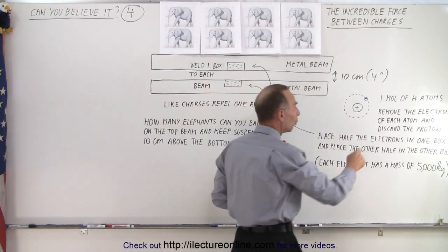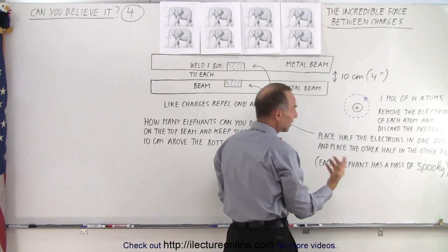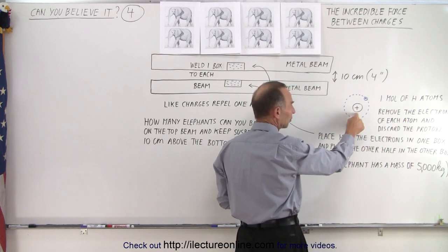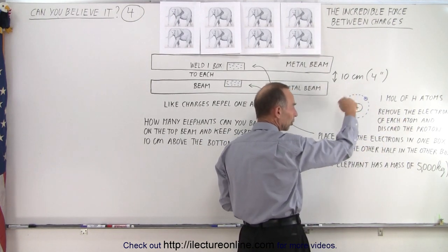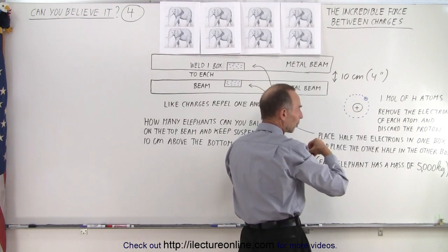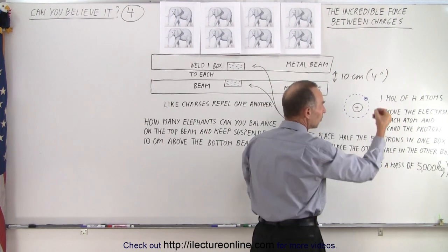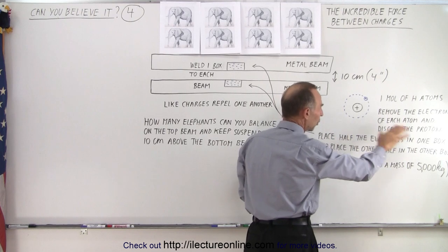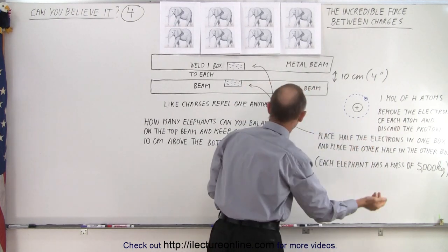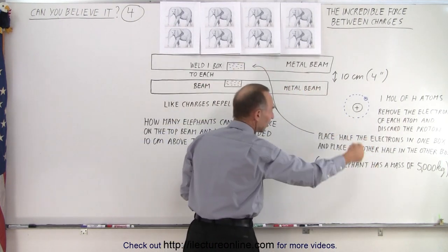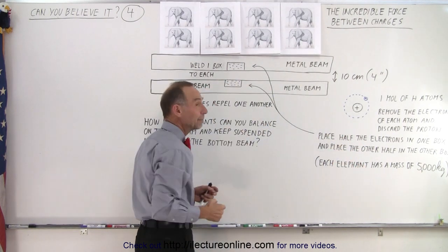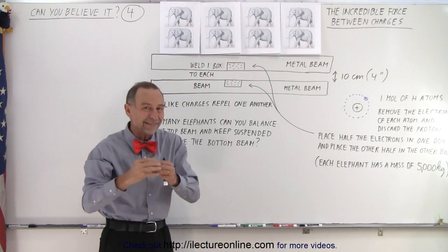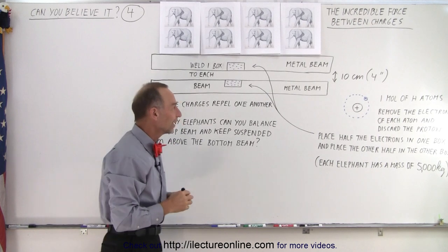We're going to make it even more difficult by putting elephants on top of the top beam, and so the question is, how many elephants can you put on the top beam and keep the two beams 10 centimeters apart? What we're going to do is take one mole of hydrogen atoms. Each hydrogen atom has a proton at the center and an electron whirling around the proton. We're going to remove the electron of a mole of hydrogen atoms, throw away the proton, and then half the electrons we're going to put in the top box, and the other half in the bottom box. So each box contains half a mole of electrons.